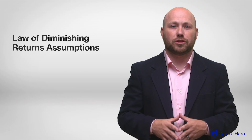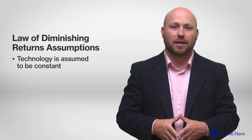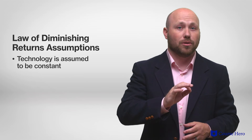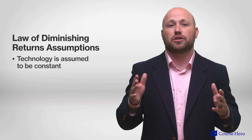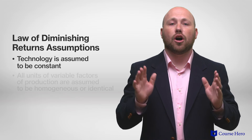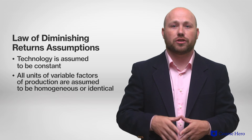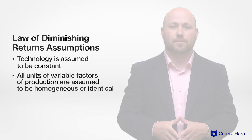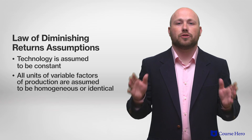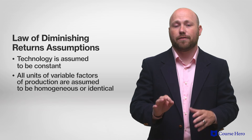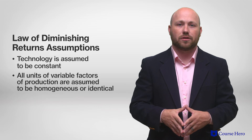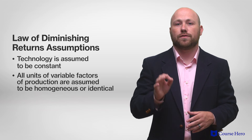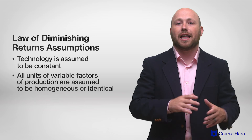The law of diminishing returns is based on several assumptions. First, technology is assumed to be constant, so there is, for example, no improvement in output per worker or per machine as a result of technological progress. Second, all units of a variable factor of production are assumed to be homogeneous or identical. The law of diminishing returns would not necessarily hold if, for example, new hires were stronger or better trained than their predecessors, or if the quality of a raw material was far worse or far better than the last one used.